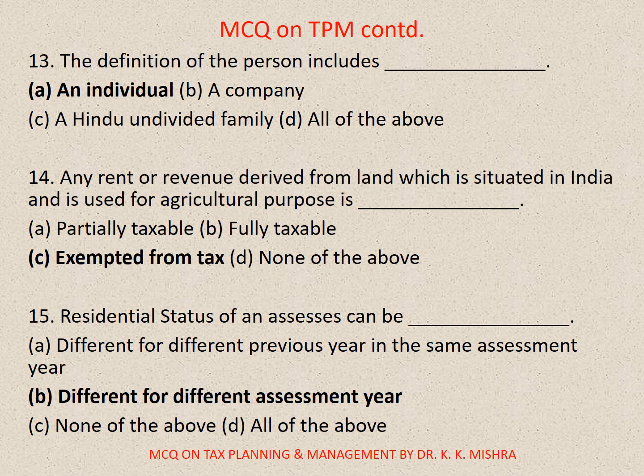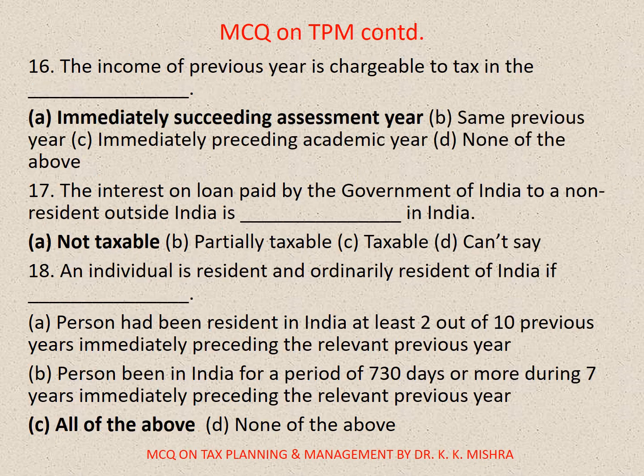Question 15: Residential status of an assessee can be — A. Different for different previous year in the same assessment year, B. Different for different assessment year, C. None of the above, D. All of the above. The correct option is B. Different for different assessment year. Question 16: The income of previous year is chargeable to tax in the — the correct option is A. Immediately succeeding assessment year.